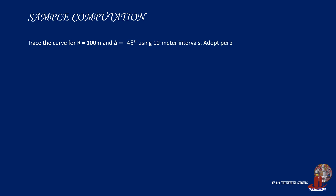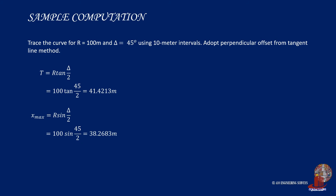Let's check a simple application. Say that we need to set a curve with R of 100 meters and angle of intersection of 45 degrees using 10 meter intervals. First, determine the length of T, which is simply the radius multiplied by tangent of delta over 2 — that is, 100 times tangent of 45 over 2, giving us 41.4213 meters. Before we start laying out lines, determine the maximum length of the interval using the formula R sine delta over 2. By plugging in R and delta, X sub n is solved as 38.2683 meters.